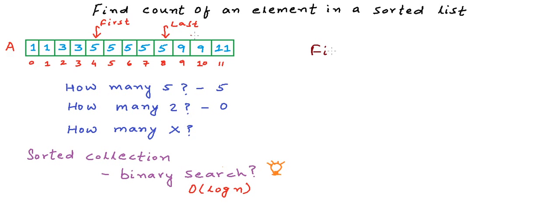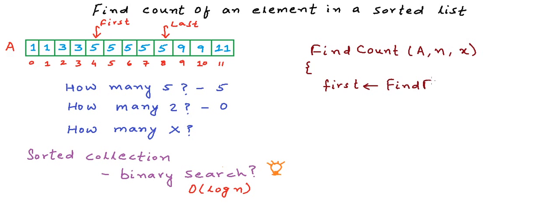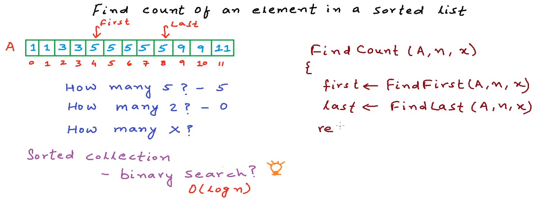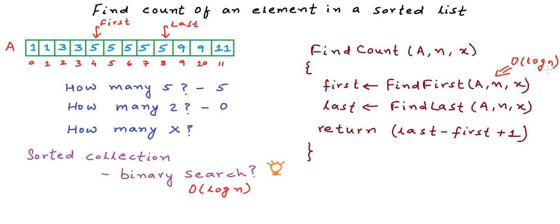So we write a method find_count that takes array a, its size n, and element x. We find the first occurrence using a method find_first — a variation of binary search — and the last occurrence using find_last. We return count as last_index minus first_index plus one. Each binary search call works in O(log n), so the overall time complexity is O(log n).